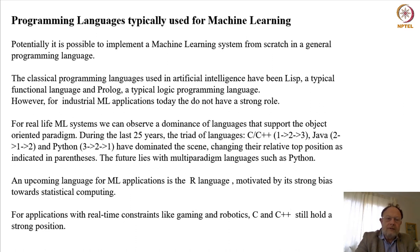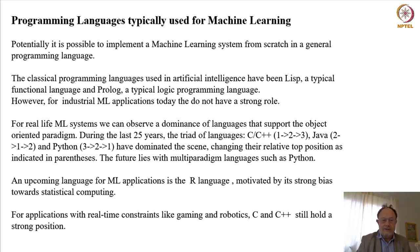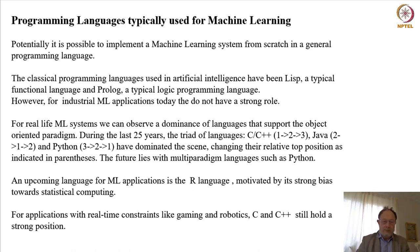For real-life machine learning systems we can observe the dominance of languages that support the object-oriented paradigm. During the last 25 years, the triad of languages C augmented with C++ to become object-oriented, Java, and finally Python have dominated. However, over this period they have changed their relative top position — originally C and C++ were very dominating, over time Java became more dominant, and at this moment the most popular and most widely used general programming language is Python.